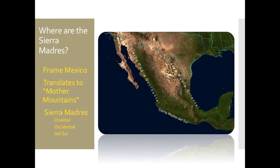There are three Sierra Madre mountain ranges in Mexico. The Sierra Madre Occidental mountains are on the western side of Mexico. The Sierra Madre Oriental mountains are on the eastern side of Mexico. And the Sierra Madre del Sur mountains are on the southern end of Mexico. Most people in Mexico live in the valley created in the middle of those three mountain ranges.